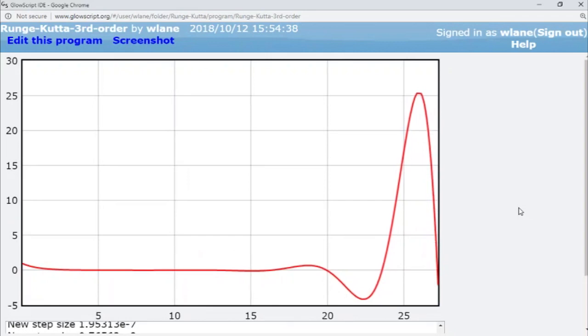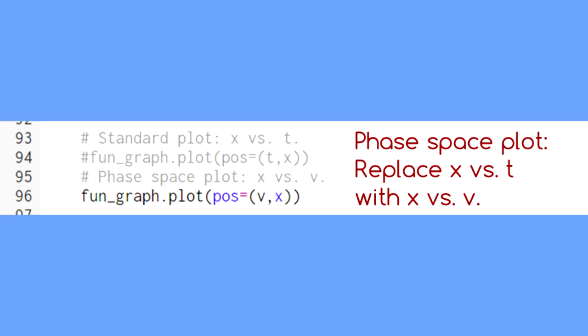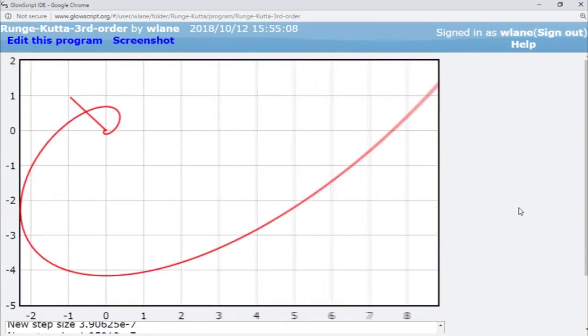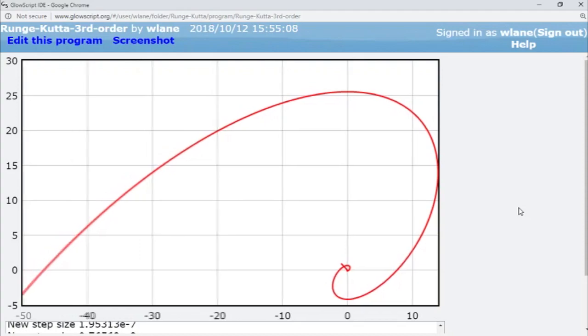Sometimes it's helpful to study these functions using a phase-space plot. When you create a phase-space plot, you graph the function versus its derivative instead of versus time. A phase-space plot helps you see when the position and velocity are at maximum or minimum values.